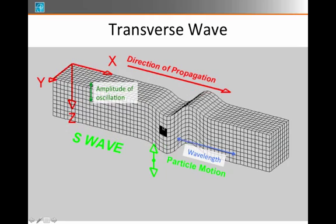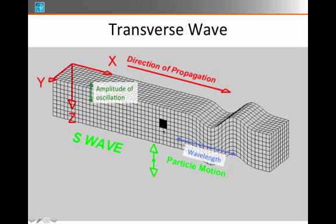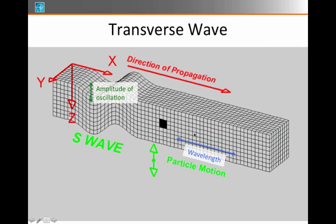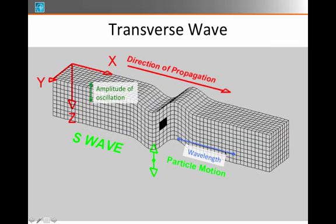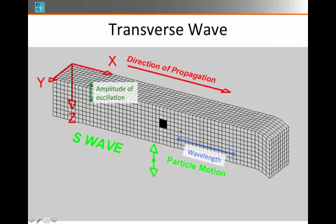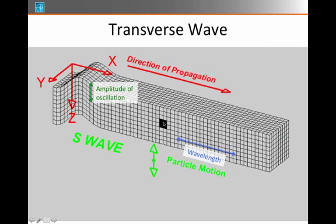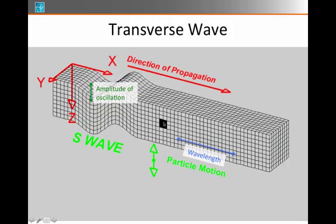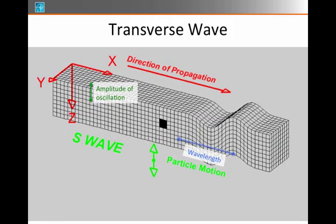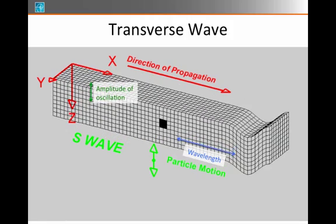Notice what happens to the little black dot. It jiggles up and down and then its energy is transferred onto its neighbor. It happens over the course of a wavelength that the whole effect is done, but the transverse oscillation of the black dot here is what tells you that you have a transverse wave.